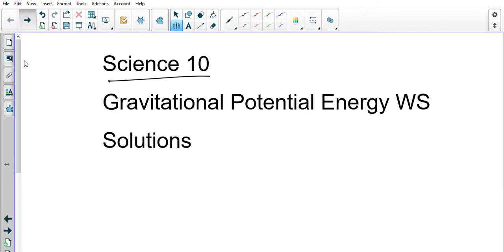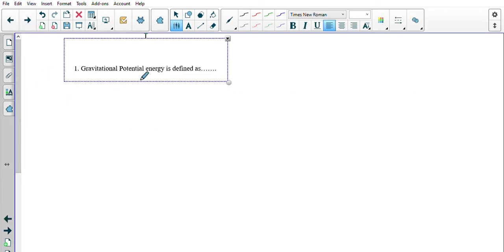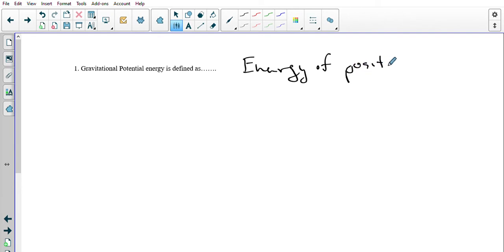Gravitational potential energy - there are different ways you could look at this. We could call this the energy of position. You could also think of it in terms of stored energy. I think I had a different definition in the video I put together yesterday, but these are really the things that we're taking a look at - the energy of position.